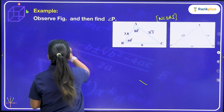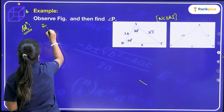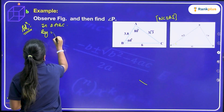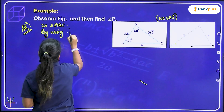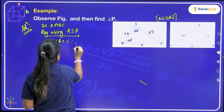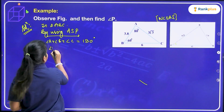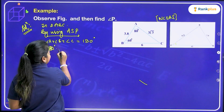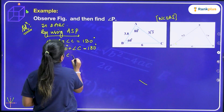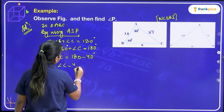In triangle ABC, by using the angle sum property, I know that angle A plus angle B plus angle C will be equal to 180 degrees. Angle A is 80 degrees and angle B is 60 degrees, so 80 plus 60 plus angle C equals 180 degrees. So angle C equals 180 minus 140, which is equal to 40 degrees.